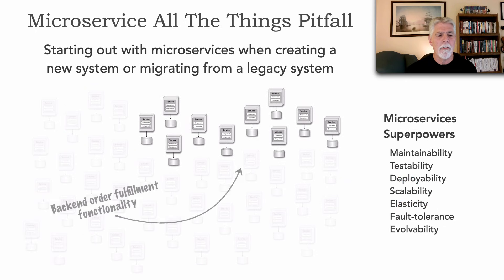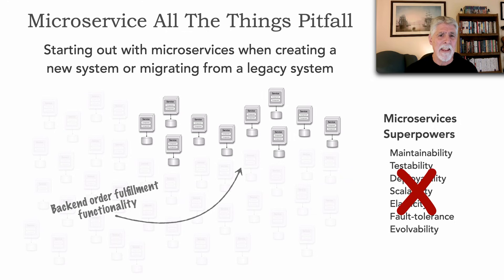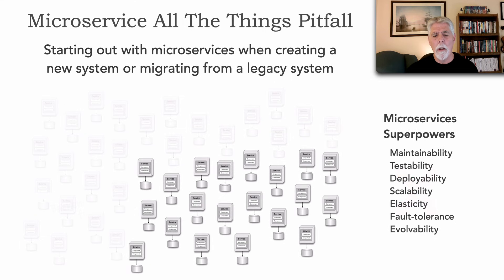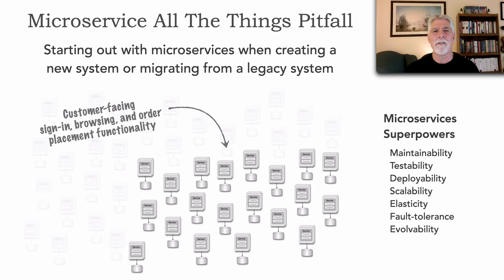The area up here happens to be all the backend order fulfillment functionality — all about picking and packing and shipping the order. Again, that really doesn't need any of these microservices superpowers but it incurs those negatives. All of the services down here that we ended up creating is all of the customer-facing functionality: things like signing in, browsing the catalog, and placing an order from a shopping cart. It turns out this is the stuff that actually does need the microservices superpowers.